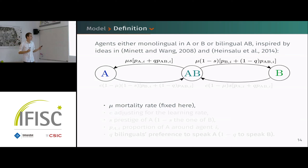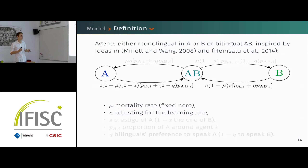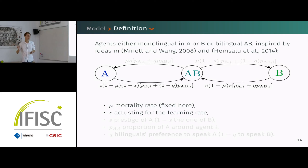For transitions to learn a new language, this is controlled by a parameter c: the higher this parameter, the easier it is to learn a new language. For example, if the two languages are very similar, c would be higher.